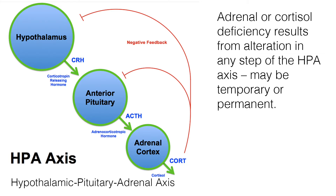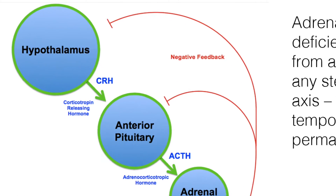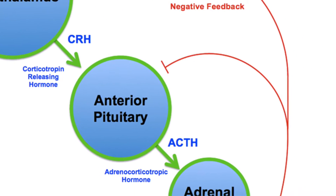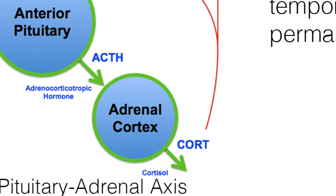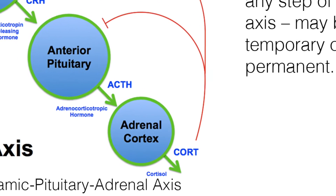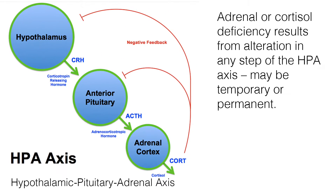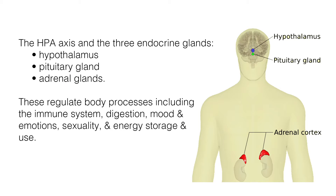The HPA axis is a complex set of direct influences and interactions between three endocrine glands: the hypothalamus, pituitary gland, and adrenal glands. These interactions control reactions to stress and regulate body processes, including the immune system, digestion, mood and emotions, sexuality, and energy storage and use.